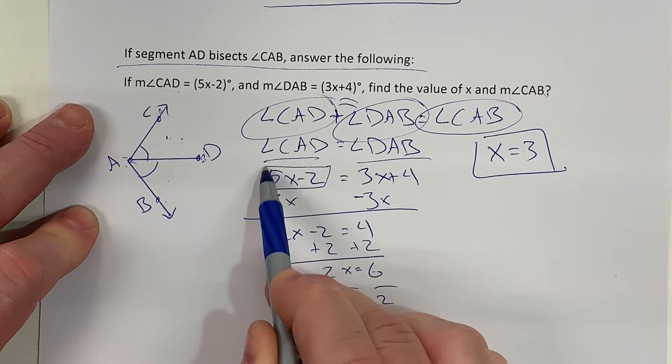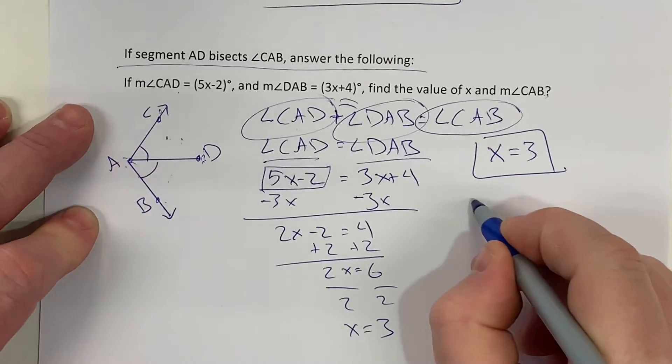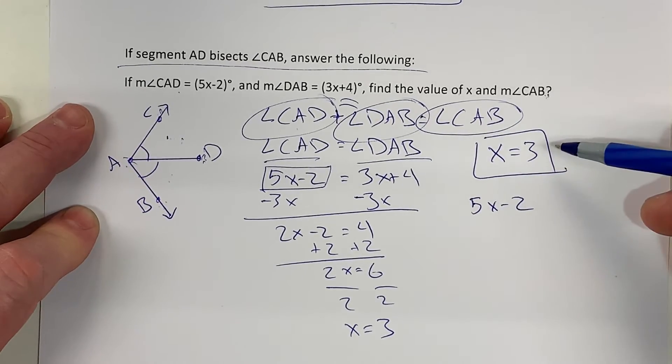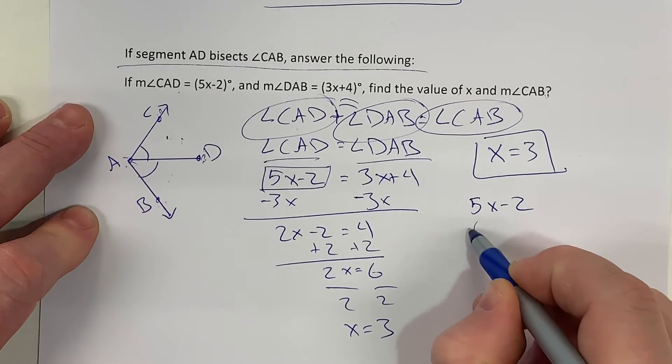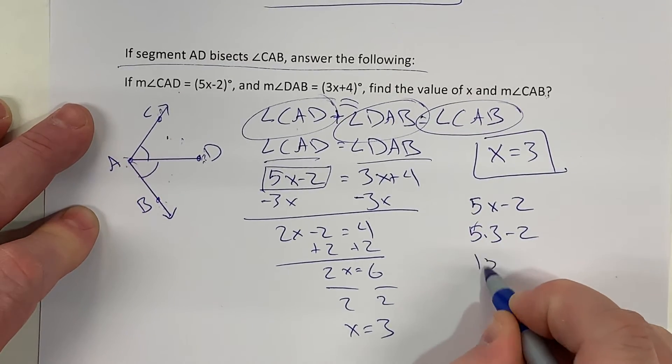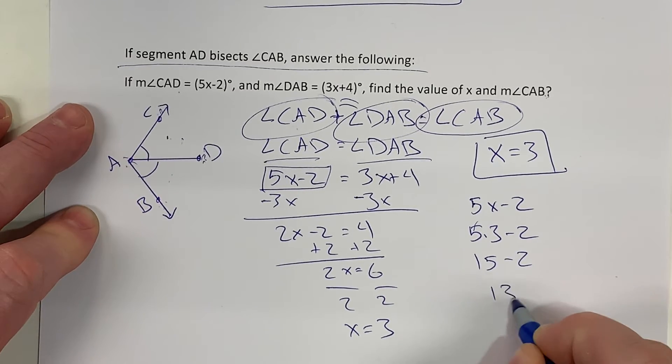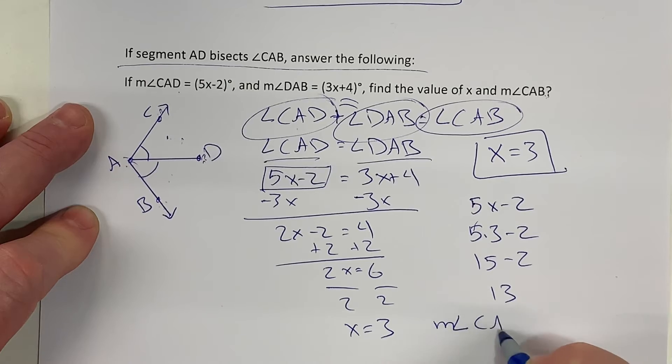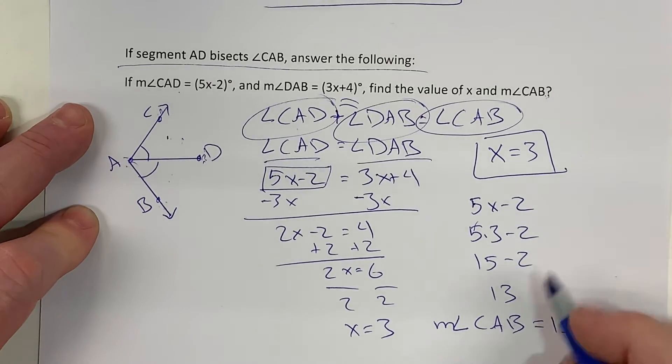CAD was represented by 5x - 2. My x here is a 3. So 5 times 3 minus 2, 15 minus 2, and I get 13.